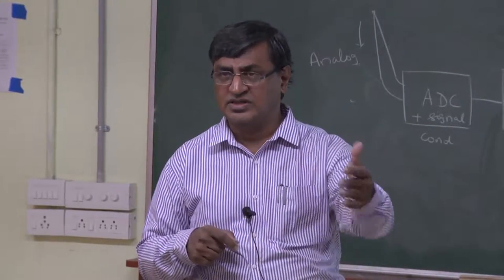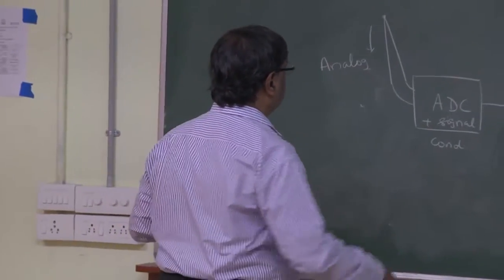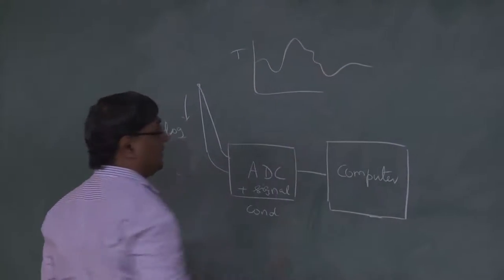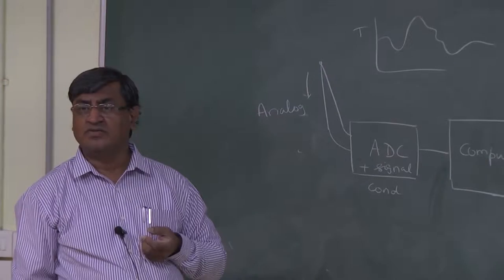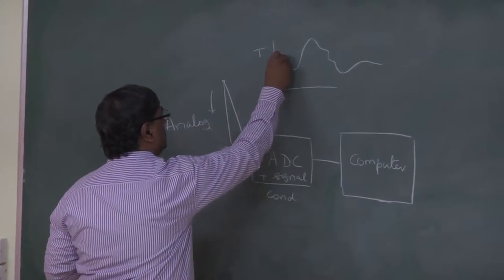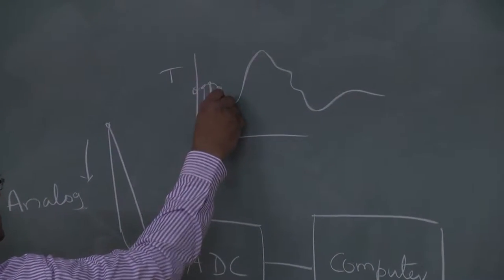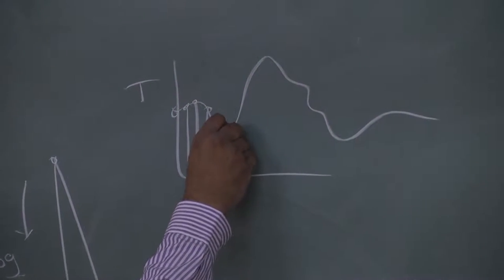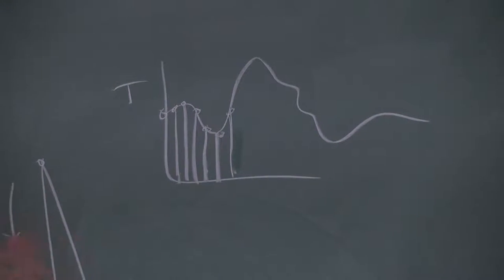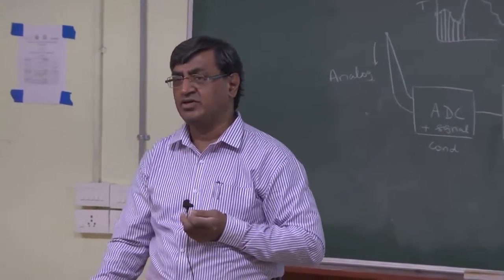Even what naturally comes in analog form — such as a thermocouple giving temperature as a function of time — must be converted to digital form. At uniform intervals, the whole data gets chopped into slices and those are transferred to the computer. That is the analog-to-digital (A/D) conversion.